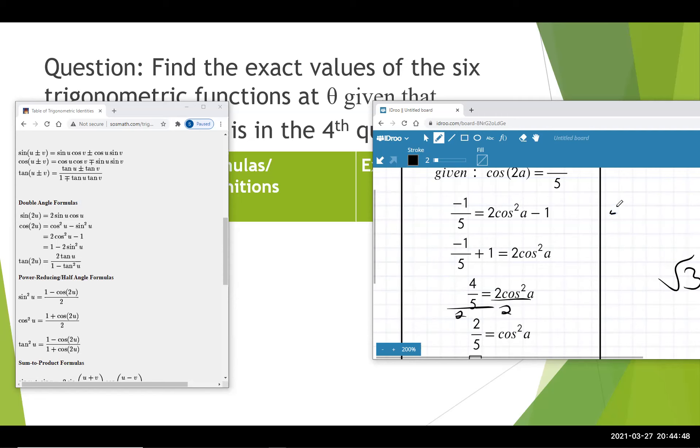And as a reminder, if you're dividing 4 fifths by 2, that's the same as dividing by 2 over 1. That means you're going to have 4 fifths times, you're going to flip the bottom fraction, 1 half, multiply the tops, multiply the bottoms to get 4 tenths, and then 4 tenths reduces to 2 fifths.